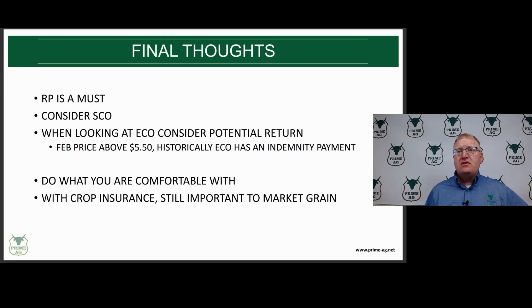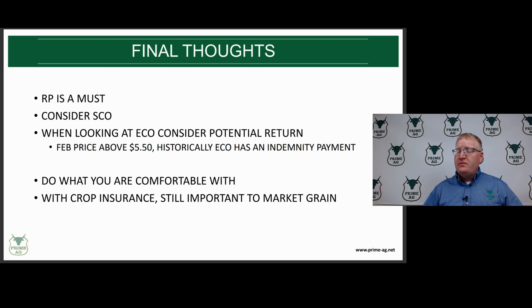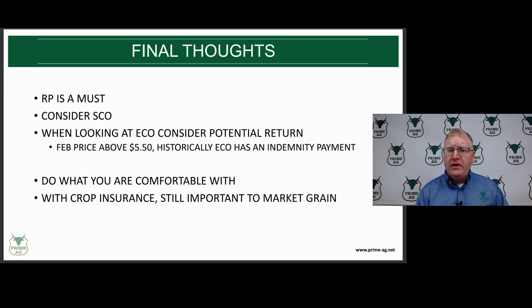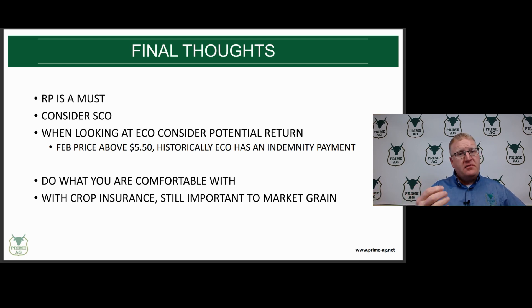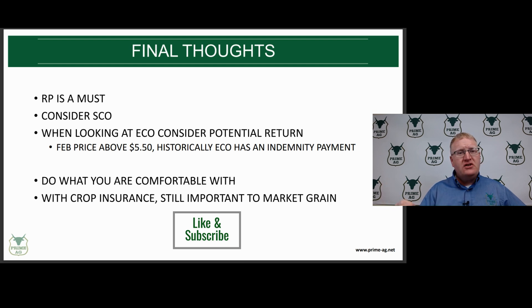To wrap things up: revenue protection is a must, especially with the cost of doing business. We believe producers need to really consider adding SEO, and in a year like this, ECO needs to be considered as well. Historically, using national averages, when the February corn price has been around $5.50, five of six years there has been an indemnity payment for ECO. When prices are at the upper end of the range, consider ECO; at the mid to lower end, you probably won't. At the end of the day, do what you're comfortable with. Also, buying crop insurance doesn't mean you stop marketing your grain — selling grain ahead, especially cash contracting, is a very important part of a marketing program. Any questions, give us a call.